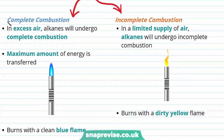In complete combustion, which occurs in excess air, the maximum amount of energy is transferred. You may have visualized this already — when the air hole of our Bunsen burners is open, the Bunsen burner burns with a clean blue flame. The oxygen supply from the air is plentiful. However, incomplete combustion can also occur, and this occurs in a limited supply of air. When we close the hole in our Bunsen burner, the air supply is restricted and we'll see the Bunsen burner burns with a dirty yellow flame. This is incomplete combustion.